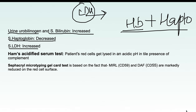Regarding specific tests for PNH: the first is the Ham's Acidified Serum Test. In this test, the patient's red cells are placed in an acidic pH in the presence of complement. If the red blood cells undergo lysis, the Ham's test is positive, making it a positive screening test for PNH.